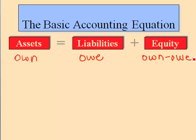For example, things you might own include a car, a house, a boat, a TV, computer, books, clothes — all that. Companies own different kinds of assets, things like supplies, inventory, cash, buildings, equipment, and furniture. And then things you owe — well, you probably have credit card bills, student loans, home loans, or car loans.